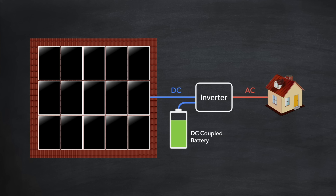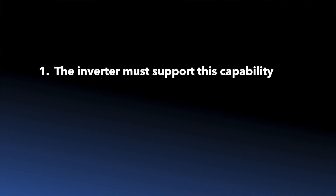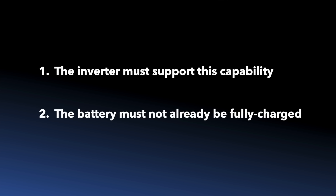Taking our example again, in the middle of the day the array might be generating around 7kW. Let's say the home requirement at that time is 5kW, which is the maximum AC output of the inverter. There is still 2kW of DC power generation available that can be used to charge the battery — so that's 2kW of power that would otherwise be clipped. There are two important caveats: one, the inverter must support this capability; and two, the home battery must not already be fully charged.